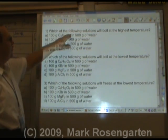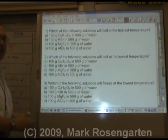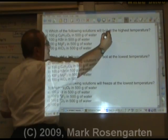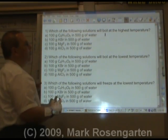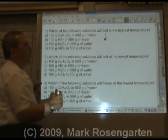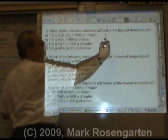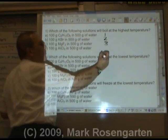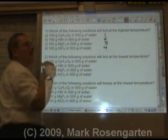Here we've got the same number of grams of substance and the same number of grams of water, but the formulas are different. C6H12O6 doesn't break up at all when you put it in water. KBr breaks up into K plus Br. MgF2 breaks up into Mg plus two fluorides. Aluminum chloride breaks up into Al and three chlorides.